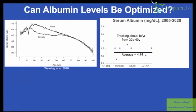So can albumin levels be optimized? I first started tracking all of my blood work 15 years ago, and at that time it was only about once a year. Based on those approximately once-a-year measurements for about 10 years in my 30s, my average albumin level was 4.74 milligrams per deciliter, which translates into 47 grams per liter.